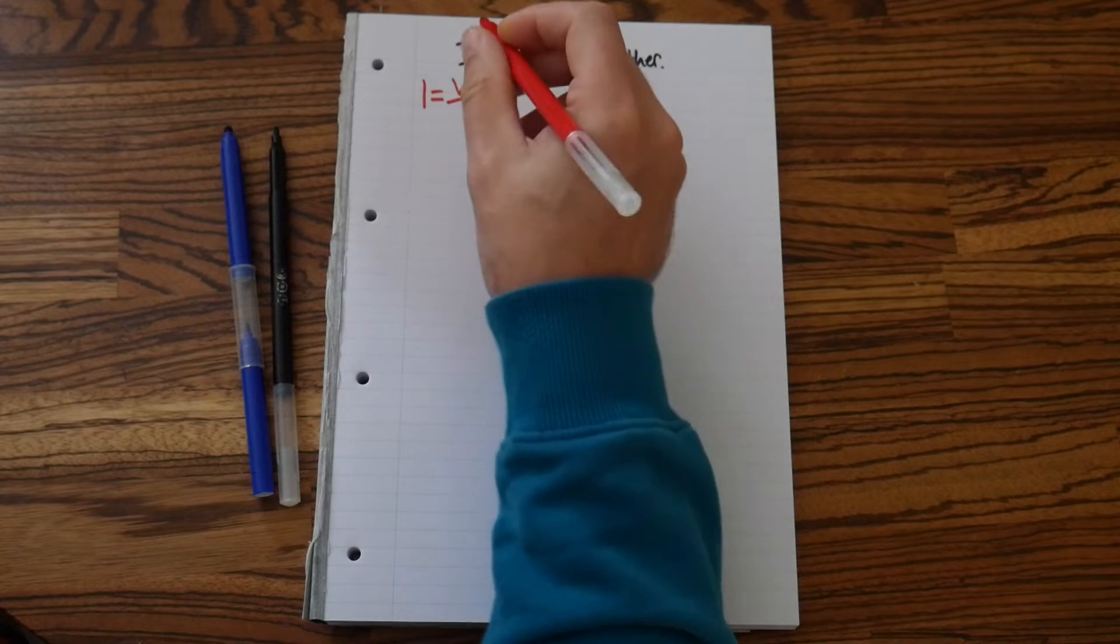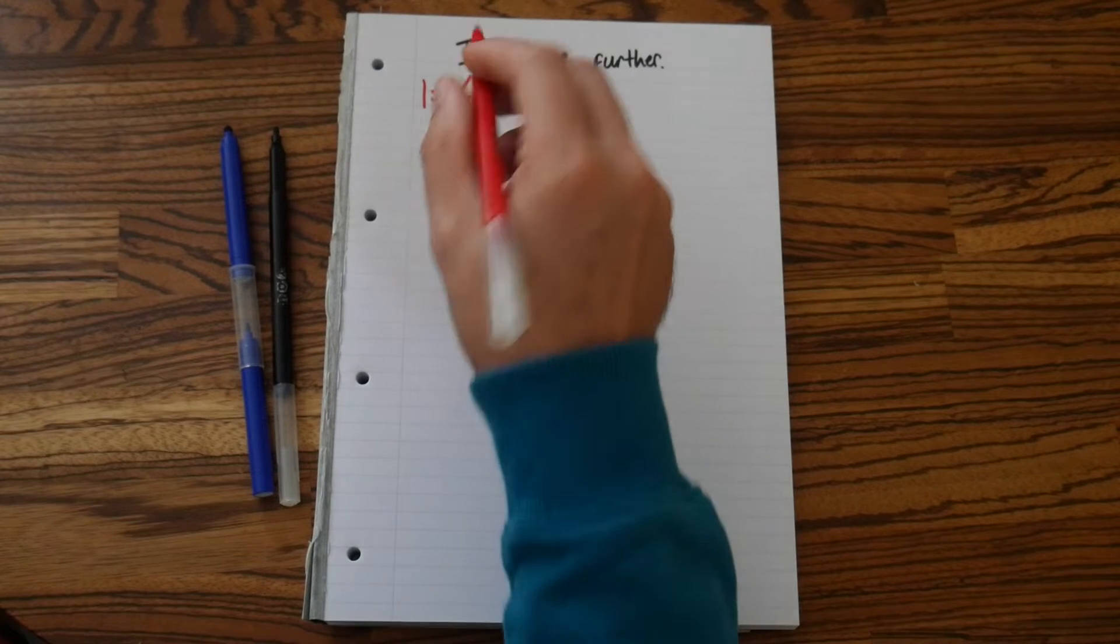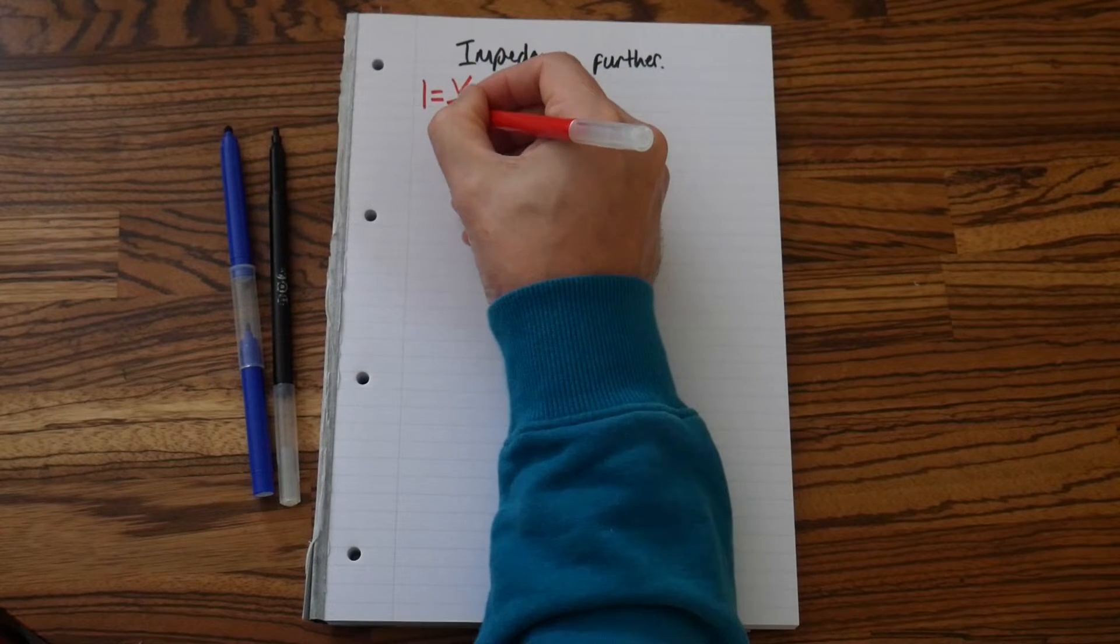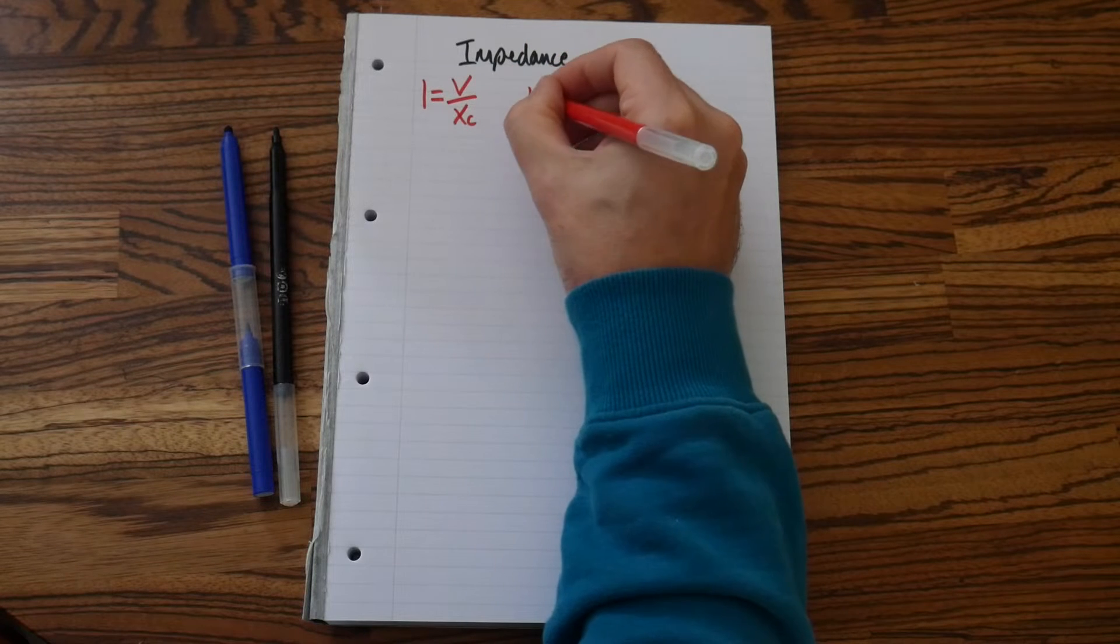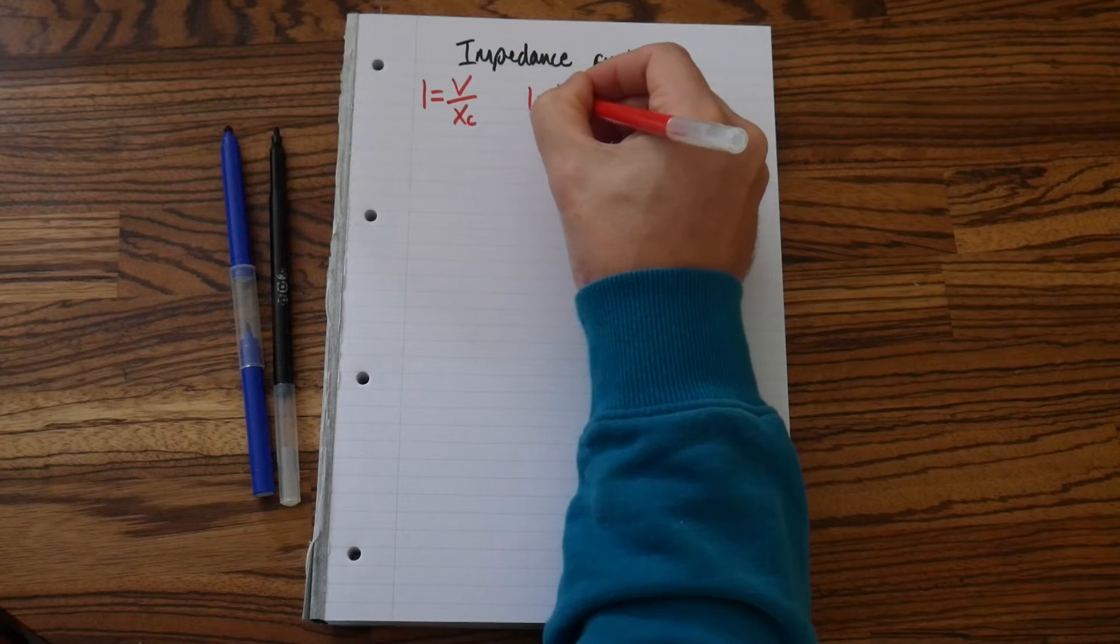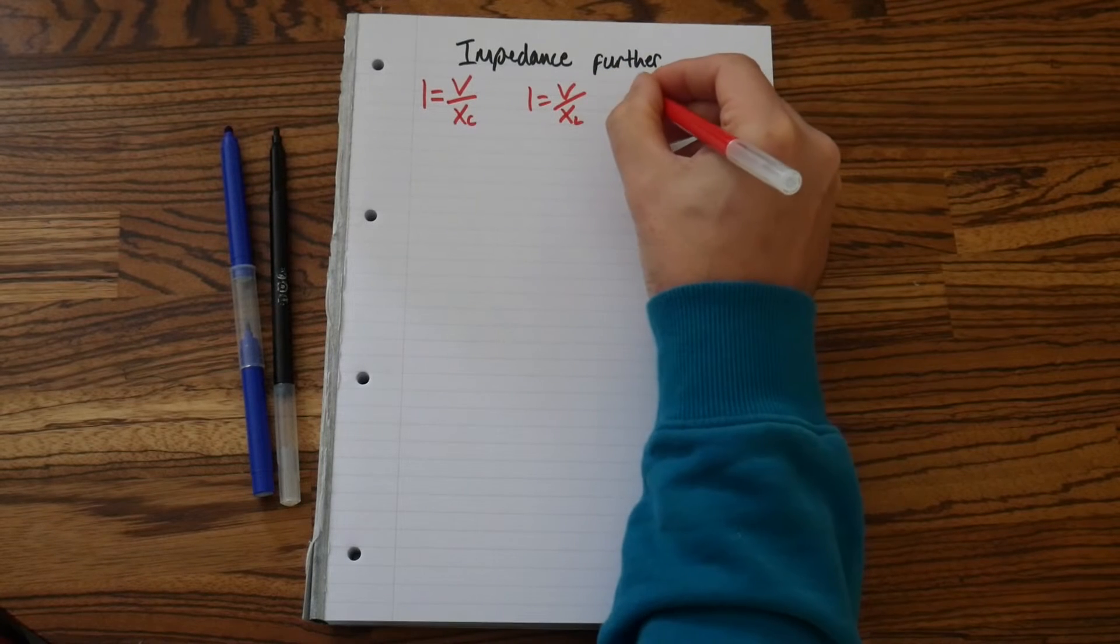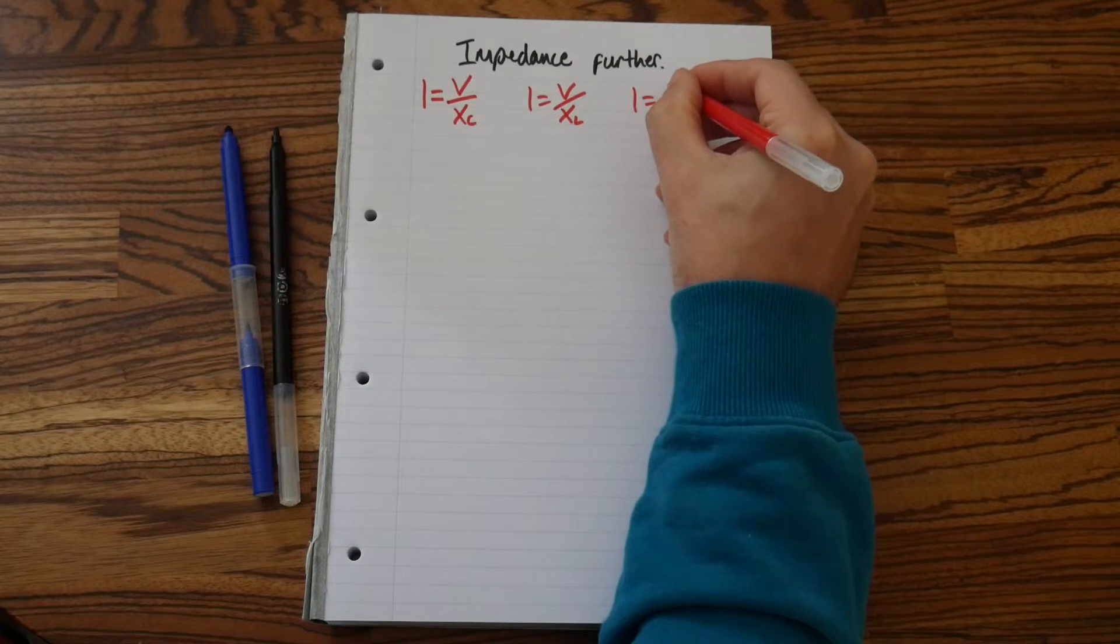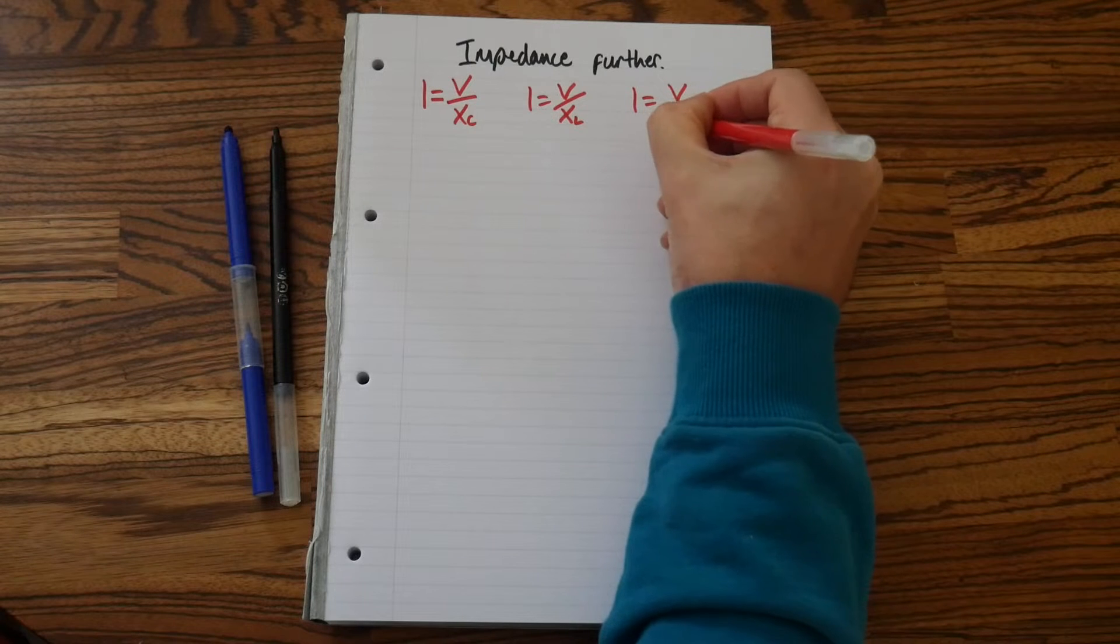But we can have anything that is measured in Ohms. So that could be Xc. We can have I equals V over X or I equals V over Z.